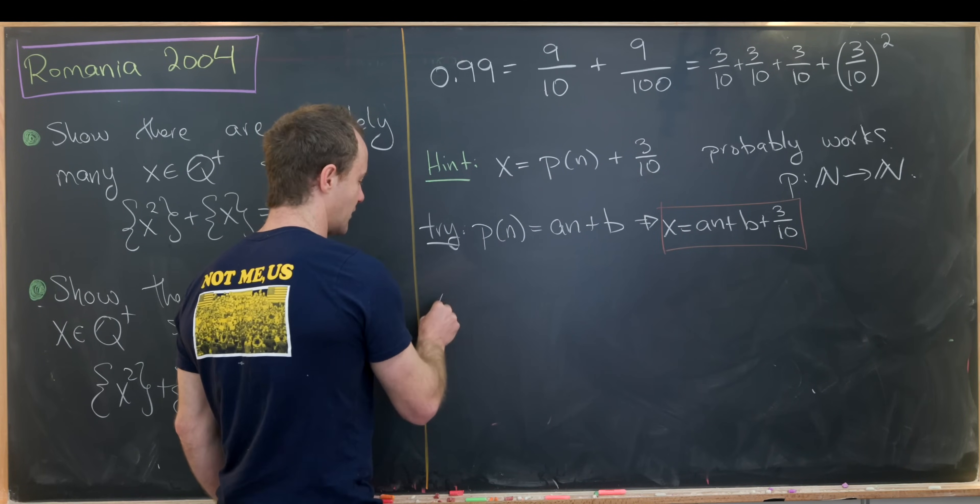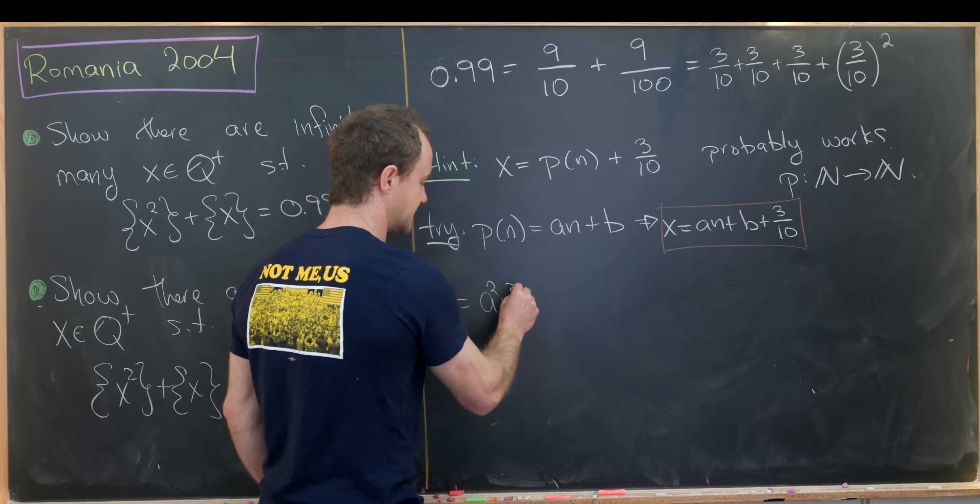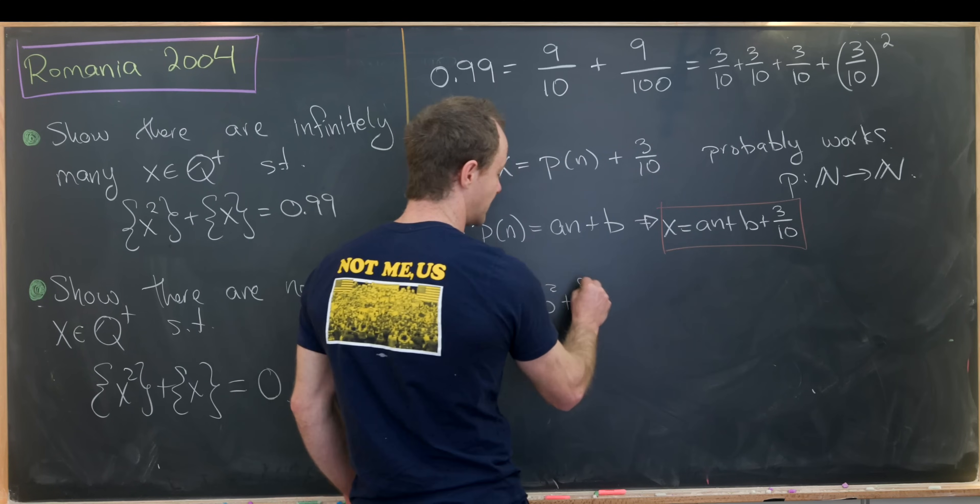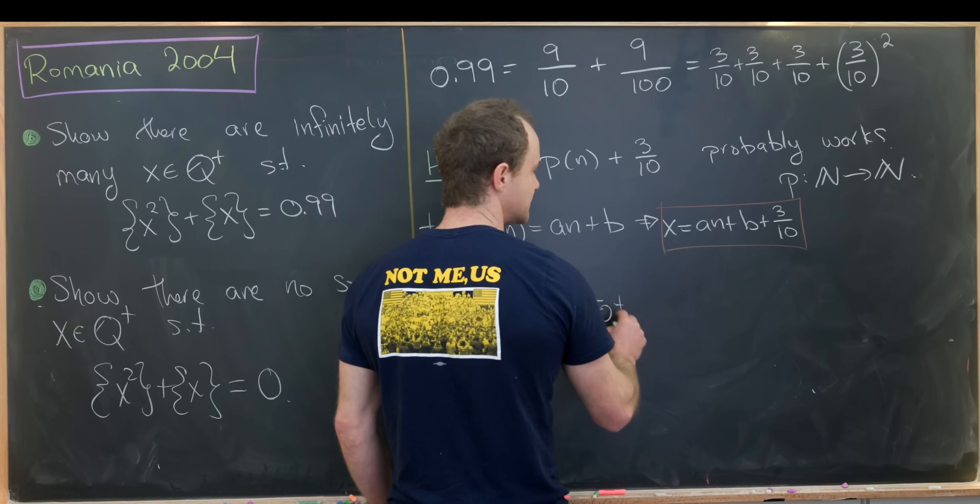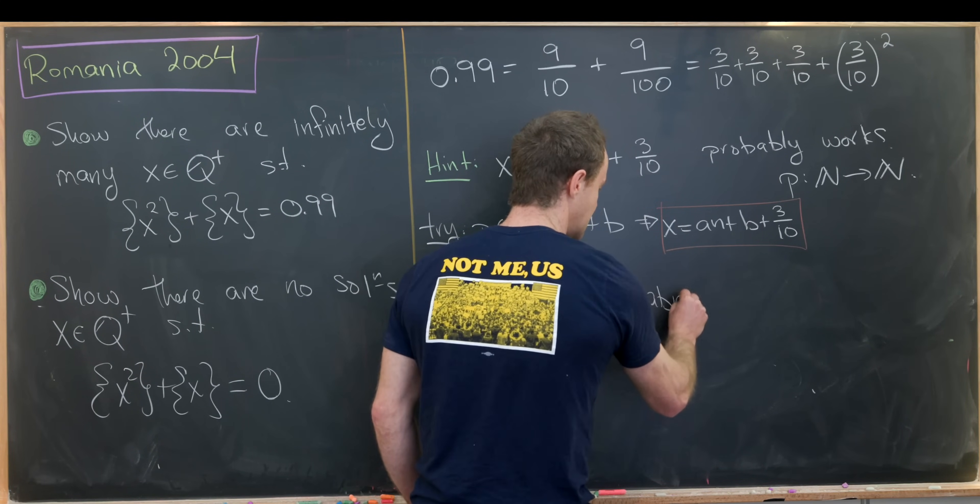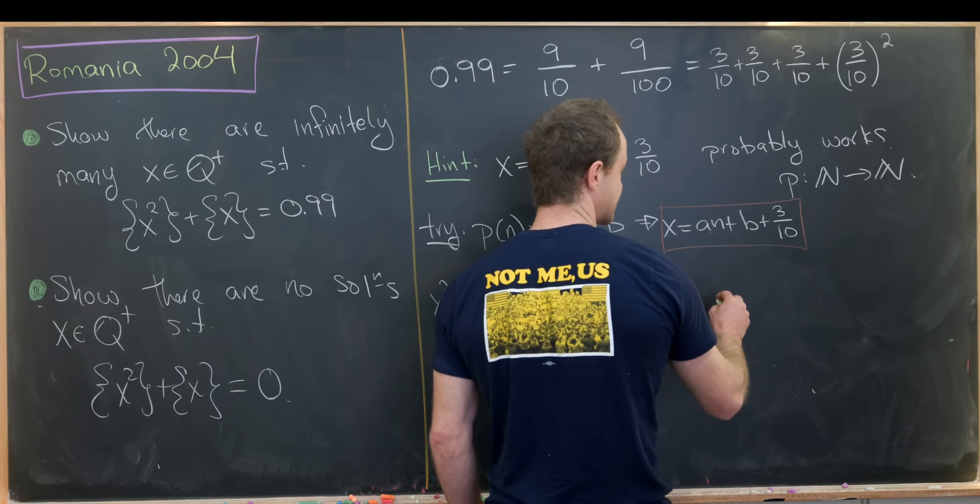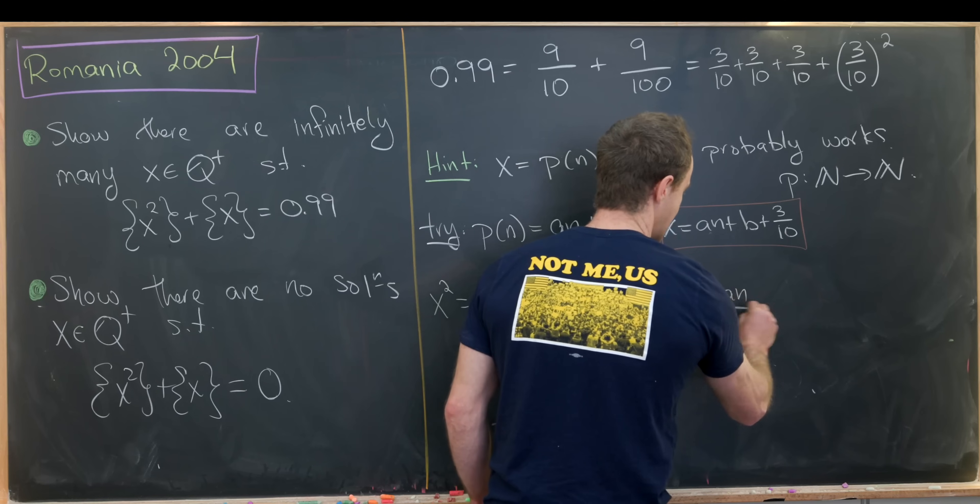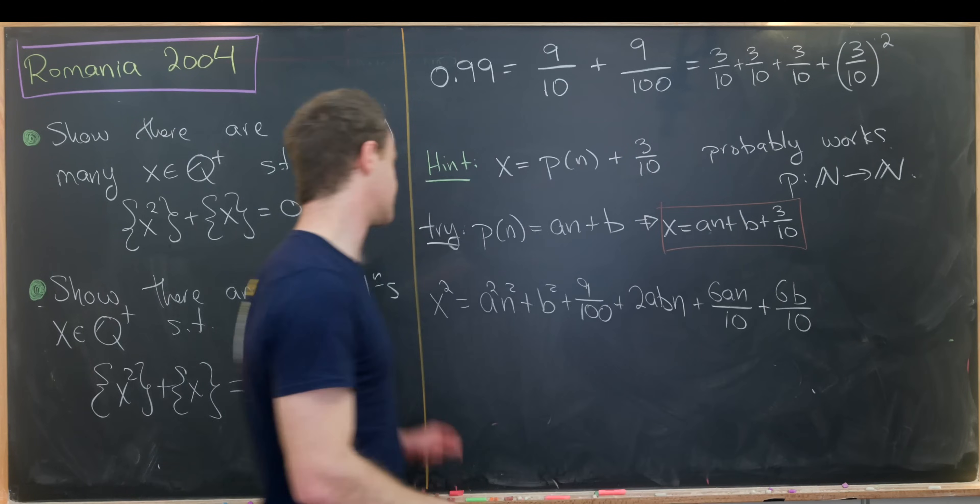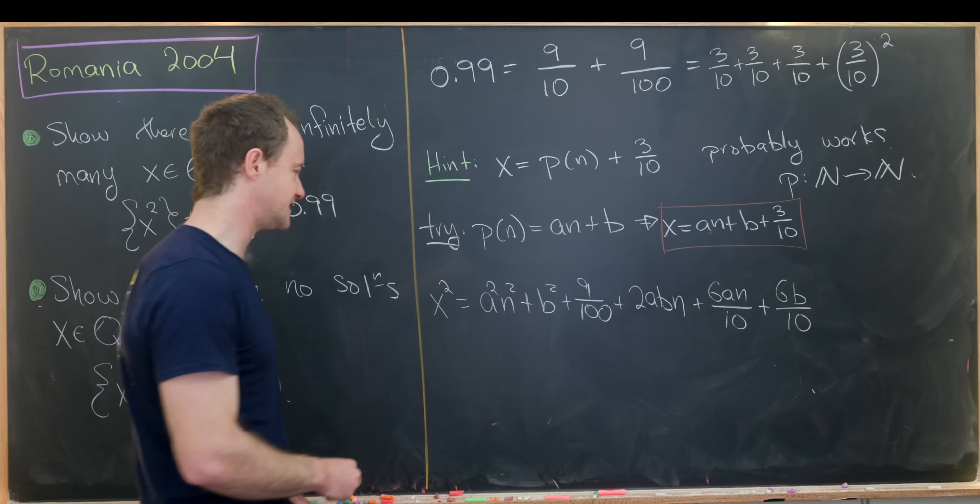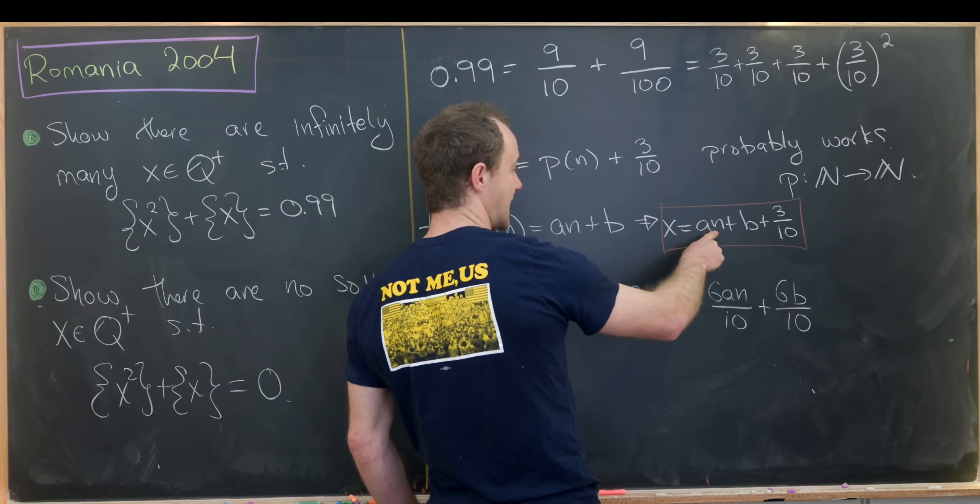Now let's calculate x squared. Multiplying that out we'll get a squared n squared plus b squared plus 9 over 100. So that comes from just squaring all of the terms. And then we get a couple of cross terms. So we'll have 2abn from the cross term from an times b, and then plus 6an over 10 plus 6b over 10. That's what we get for x squared. Now let's see what happens when we take the fractional part.